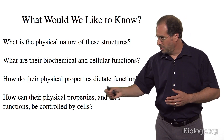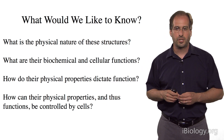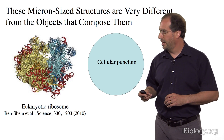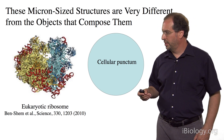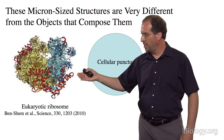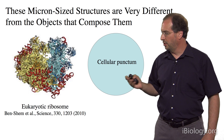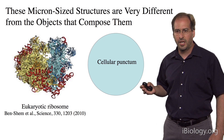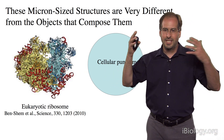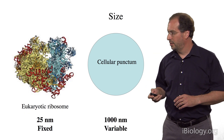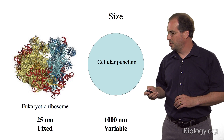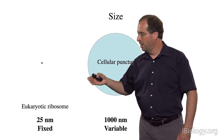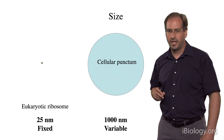These are a fairly straightforward set of questions, but they're all very difficult. Many of those challenges can be illustrated by comparing a macromolecular assembly — even a very large one like the eukaryotic ribosome — to a generic cellular punctum, these micron-sized membrane-less structures. One of the first points of comparison is size: even the eukaryotic ribosome, which is a gigantic macromolecular machine, when you scale it to the size of one of these cellular puncta, is minuscule. A 25-nanometer ribosome is tiny compared to a 1 micron-diameter cellular punctum.